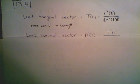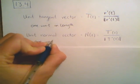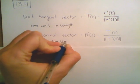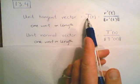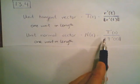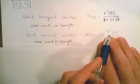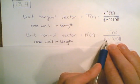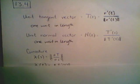Our next definition is the unit normal vector. Again, we want it to be one unit in length. The unit normal vector is the derivative of our unit tangent vector divided by the magnitude of the derivative of the unit tangent vector. This is guaranteed to be one unit in length because we divided the vector by its own length — if it was three inches long, dividing by three shrinks it down to one unit in length.